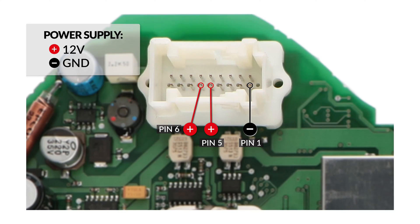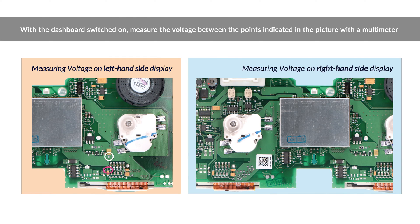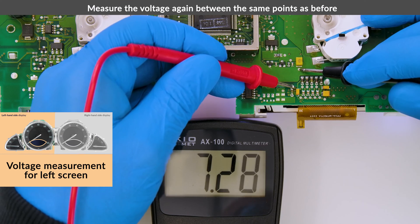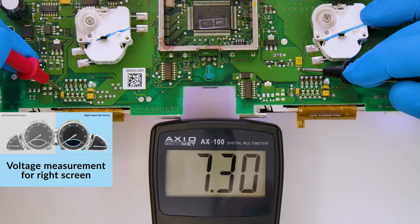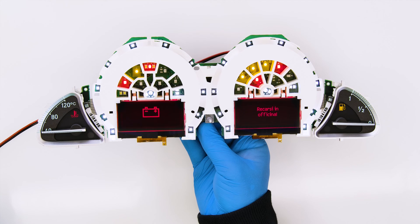Switch on the dashboard again, and with the multimeter, recheck the voltage for both screens. If the voltage, as in this case, is now between 7.25V and 7.35V, the modification was successful.